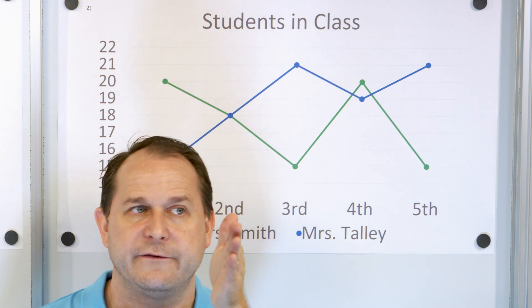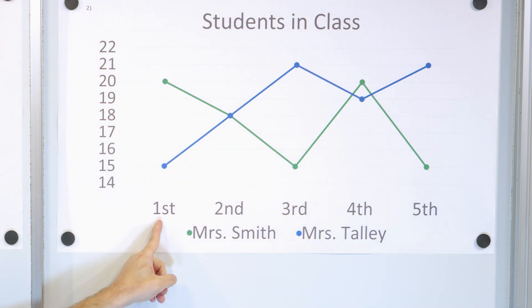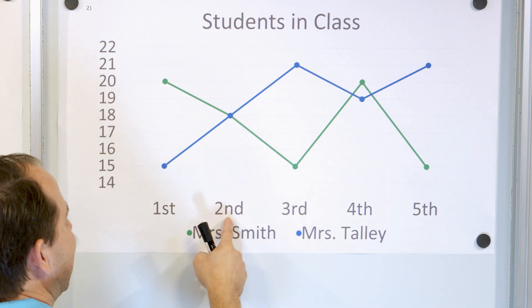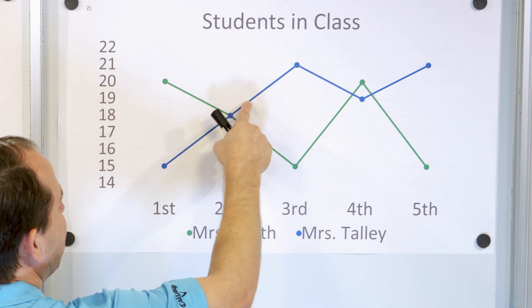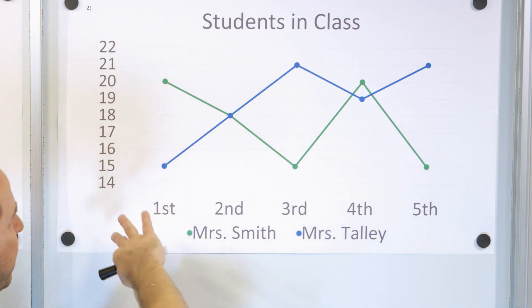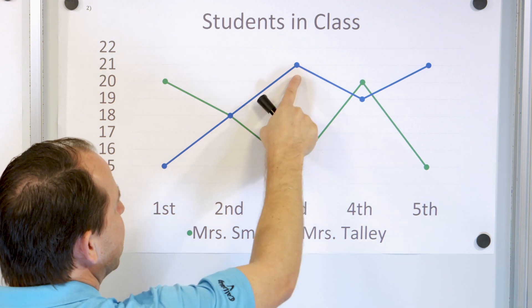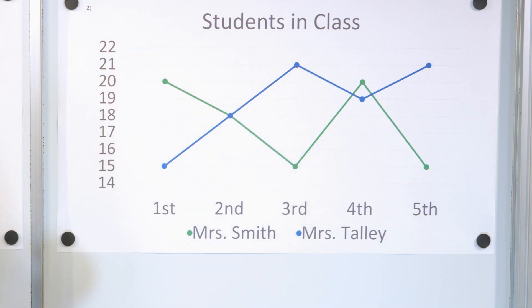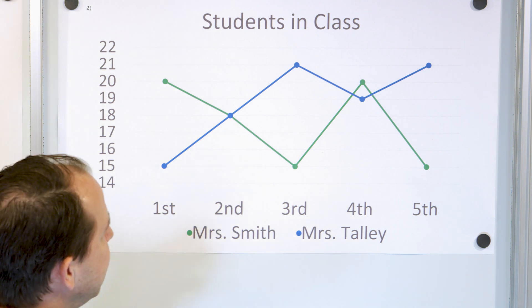First, isolate your gaze to first period. First period, what is happening? Mrs. Talley has, you read it over because Mrs. Talley is in blue, is 15 students. In first period, Mrs. Smith in green is a lot more students at 20. Now in second period, it looks like the graphs cross. Both of the different teachers actually have 18 students for second period. But by third period, everything reverses and the blue graph is on top. Mrs. Talley has 21 students and Mrs. Smith has gone down to 15 students and so on and so forth.